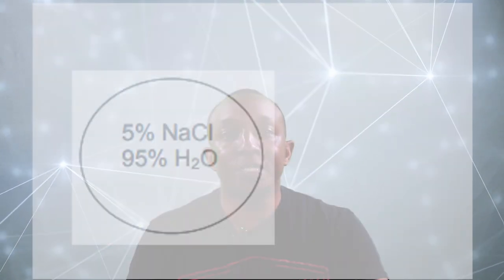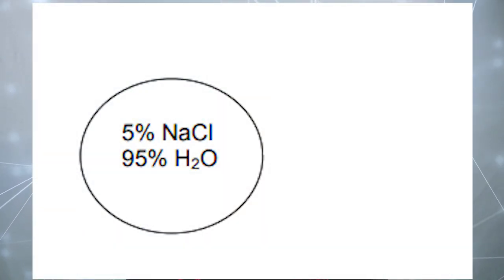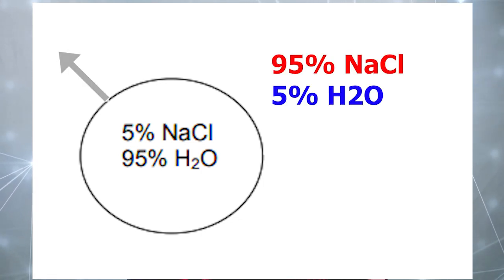Osmosis is a type of passive transport that diffuses water across the cell membrane to balance out the concentration of another substance. For example, what if there was 5% salt concentration inside of a cell and 95% salt concentration outside of the cell.